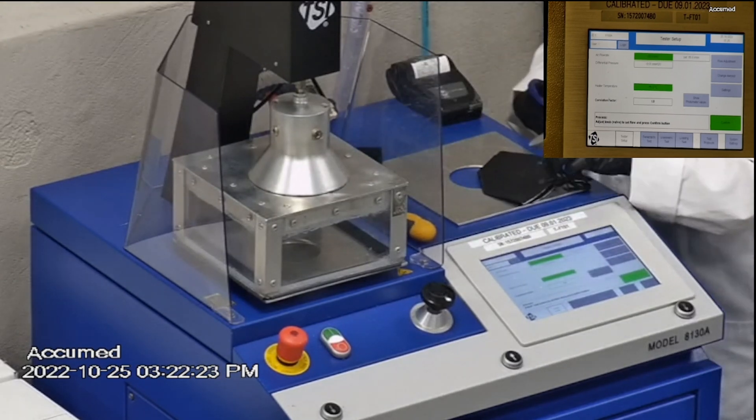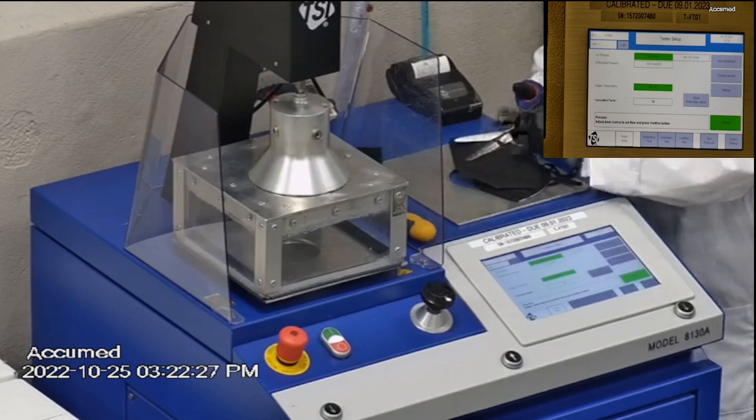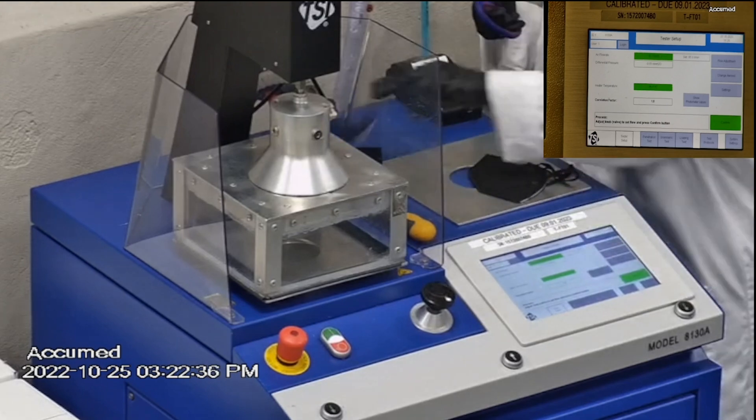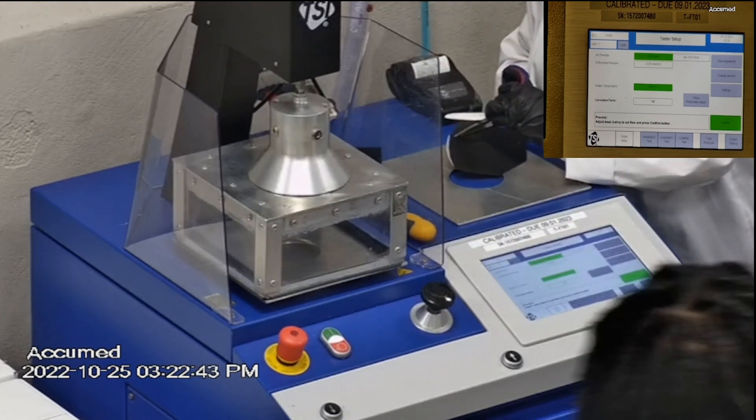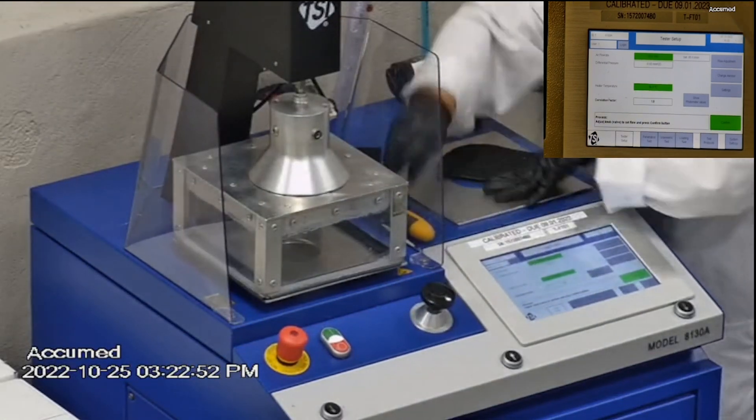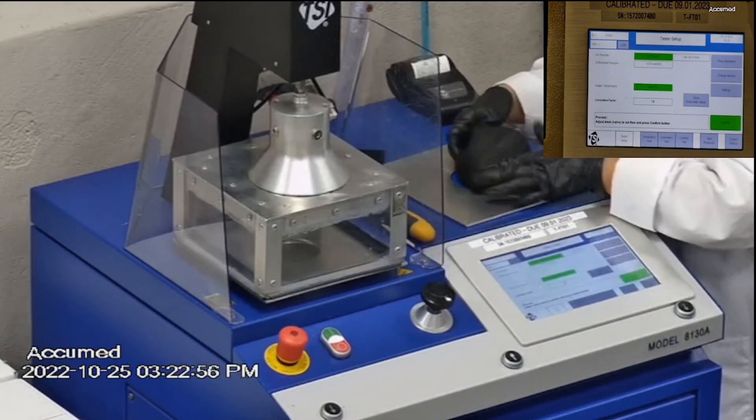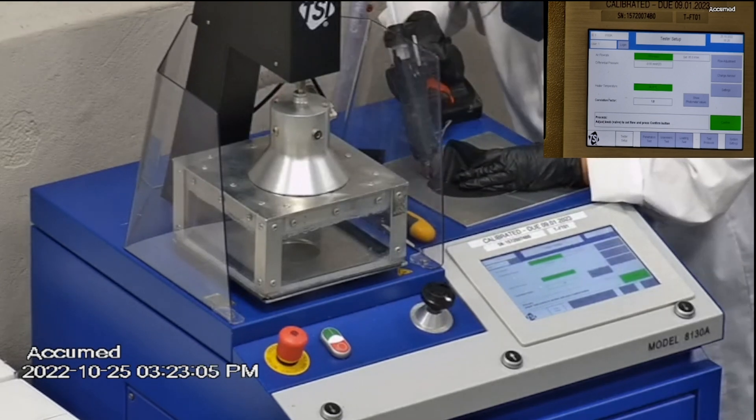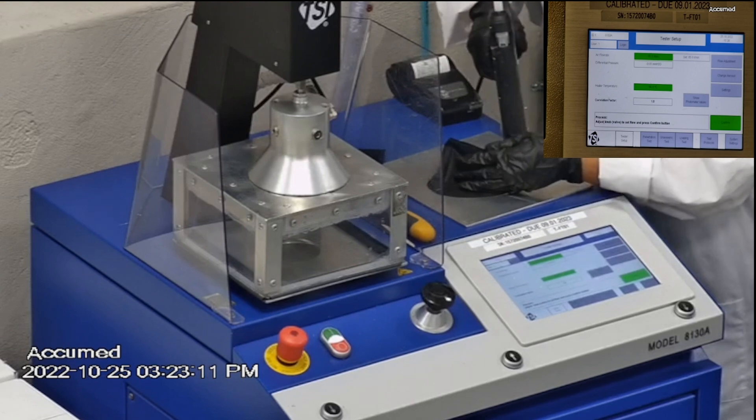Our procedure is also inspired by NIOSH. We first run the tester setup and start removing the ear loop bands from the mask before placing it on the testing plate to ensure a proper seal. Then we make sure that the mask is properly and completely sealed with hot glue to the testing plate. When applying the hot melt glue we make sure that there is no holes or leakage around the seal to ensure accurate results.